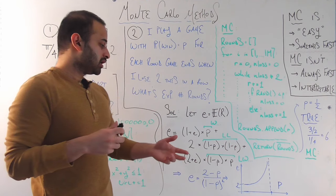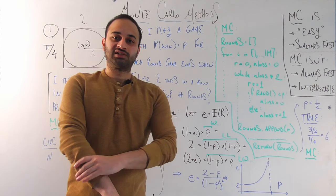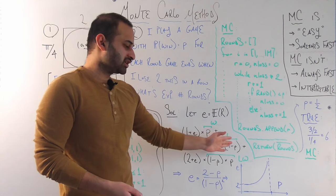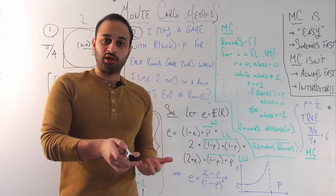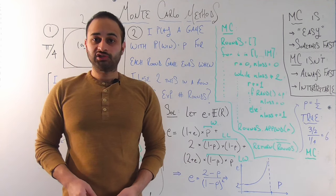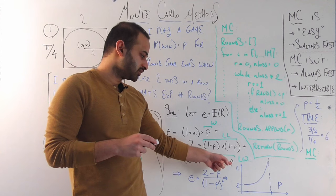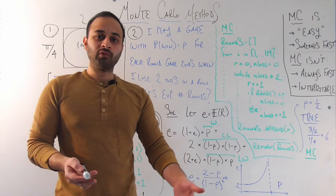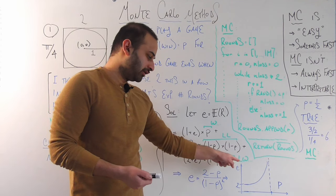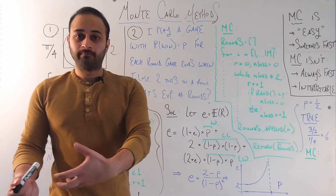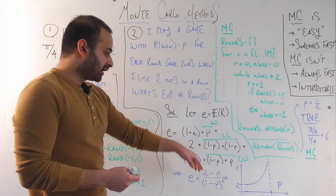The second case is loss, loss: you begin the game and unfortunately get two losses in a row, and the game is over. The probability of this is (1 minus p) times (1 minus p). The expected number of rounds is simply 2. The final case is loss then win, with probability (1 minus p) times p. I've already played two rounds to get the loss and the win, so that's 2, and then I add little e — because I got a win on the second round, so it's like starting from scratch again.